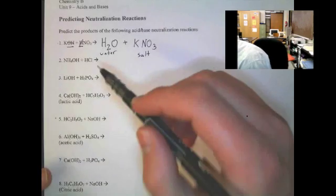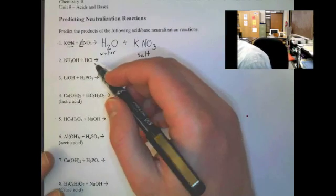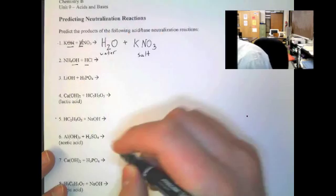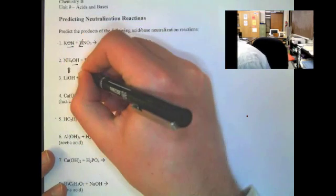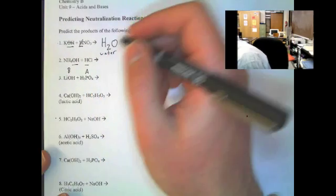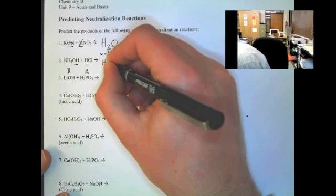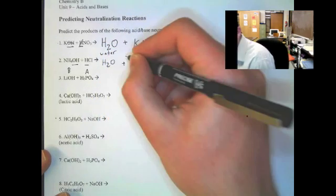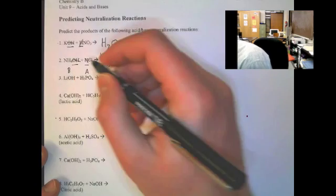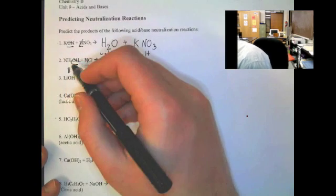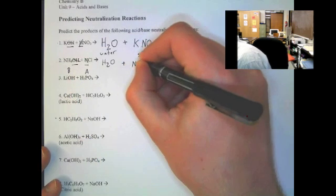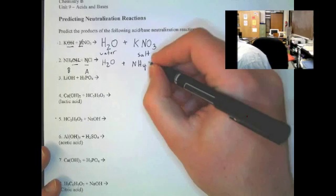Now let's look at number 2. You've got ammonium hydroxide and hydrochloric acid — NH4OH and HCl. Again, base and acid. The product, always for a neutralization reaction, is H2O. We cross those off. Remember that the base is a cation in this case — NH4, ammonium, is a positive polyatomic ion — so we write out NH4 first and then chlorine.